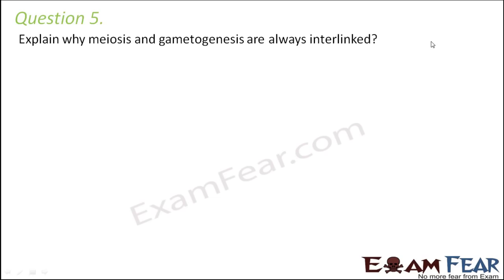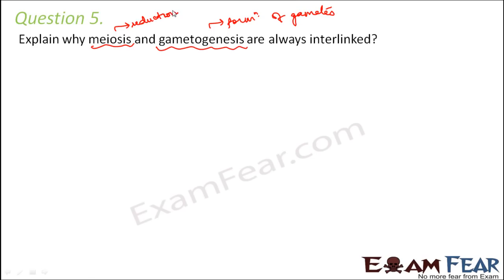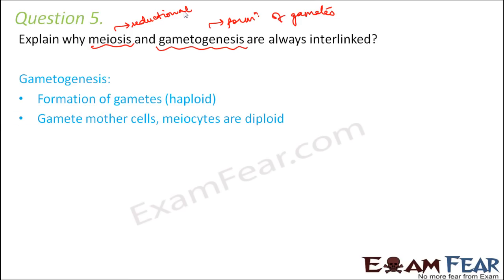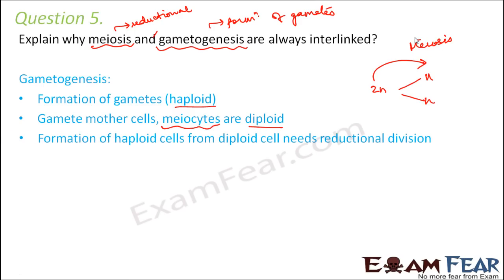Question number five: explain why meiosis and gametogenesis are interlinked. Gametogenesis is the formation of gametes — the sex cells. Meiosis is the reductional division where the chromosome number is reduced to half. Gametes are haploid and they are formed from gamete mother cells called meiocytes, which are diploid. In order to form haploid cells from diploid meiocytes, you need to reduce the chromosome number, and for that you need meiosis.